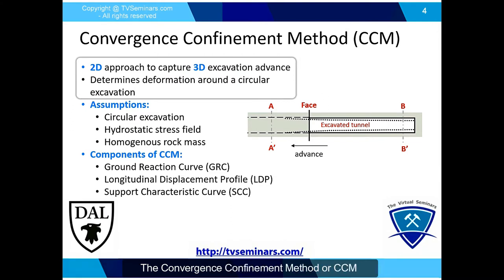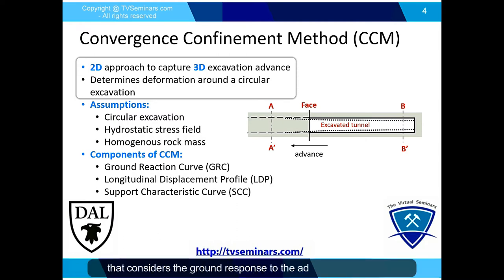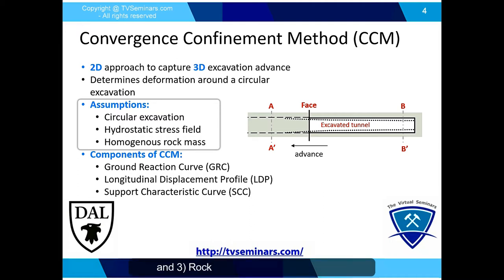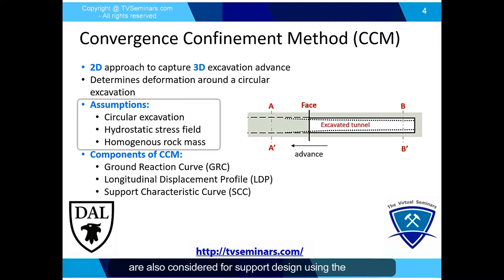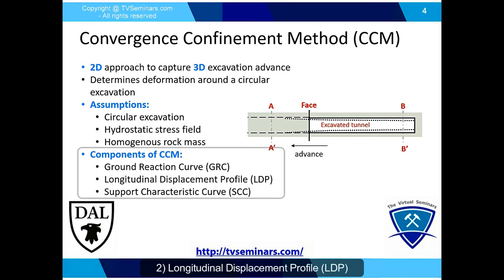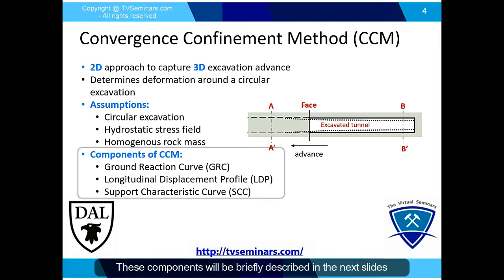The convergence confinement method, or CCM, is a method introduced in tunnel construction that considers the ground response to the advancing tunnel face and the interaction with installed support. There are three main assumptions: first, excavation must be circular; second, stresses should be isotropic; and third, rock mass should be homogeneous. It should be noted that in numerical modeling, non-isotropic stresses are also considered for support design using the CCM. The three components of the CCM include the ground reaction curve (GRC), the longitudinal displacement profile (LDP), and the support characteristic curve (SCC), which will be described in the next slides.